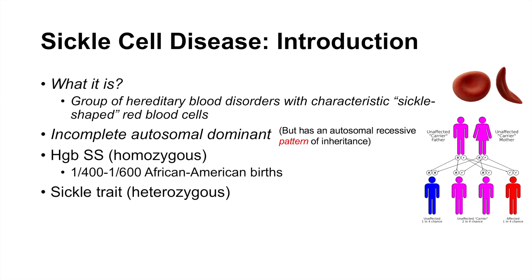The other portion of individuals — those with only one affected allele — are considered heterozygous and they are considered to have sickle trait. They're very slightly affected, but not to the degree of someone with homozygous hemoglobin SS. Individuals with sickle trait, or heterozygous individuals, make up about 7 to 8 percent of African-Americans.